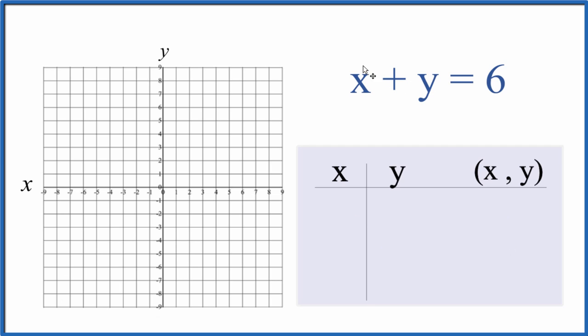Let's put some values in for x, and then we'll find the values for y, get those points and graph them. If we have x is 0, that would mean 0 plus y equals 6. So when x is 0, y equals 6.